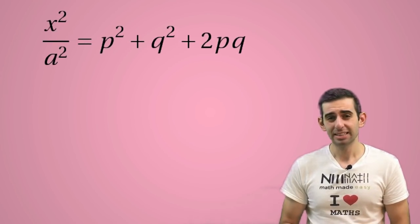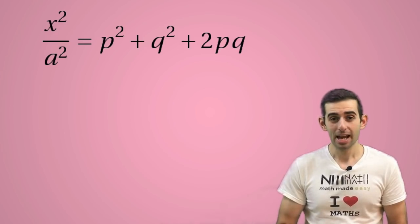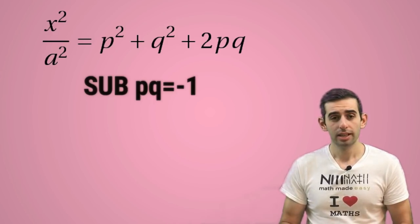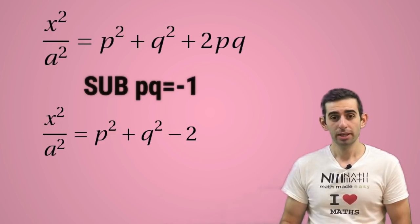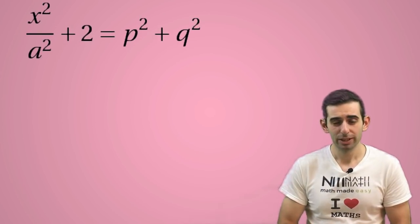That gives us x²/a² = p²+q²+2pq, and now we can substitute in the condition that pq = -1. So now that's x²/a² = p²+q²-2. And if we make p²+q² the subject, that just equals x²/a²+2.